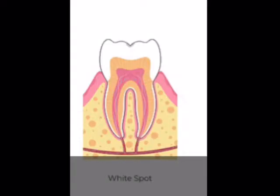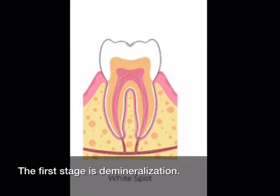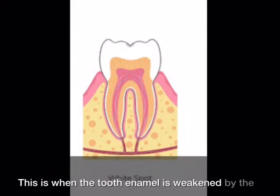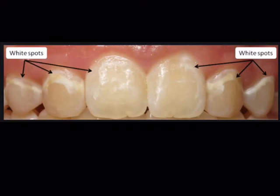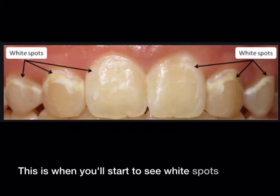The first stage is demineralization. This is when the tooth enamel is weakened by the acids. This is when you'll start to see white spots appear on your teeth.